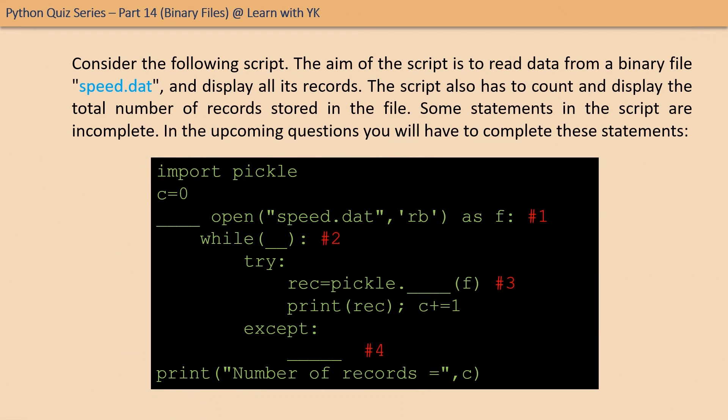Consider the following script — the aim of this script is to read data from binary file speed.dat and display all its records. The script also has to count and display the total number of records stored in the file. Some statements in the script are incomplete — in the upcoming questions you will have to complete these statements.